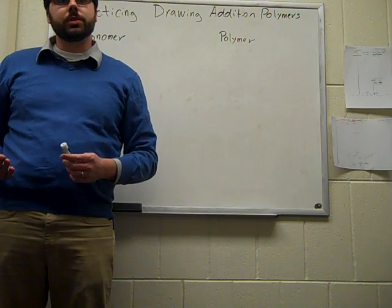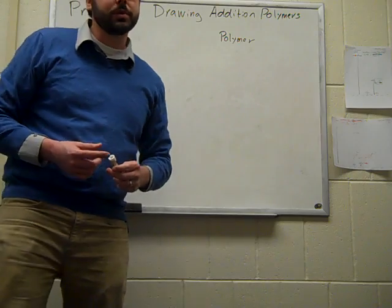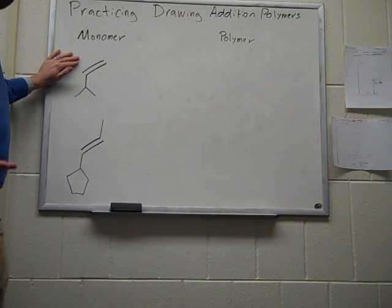And so, remember, polymers are large molecules made of repeating units called monomers. And when looking at addition polymers, typically these monomers are made out of alkenes.